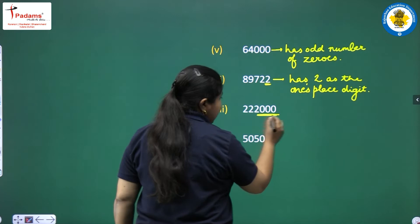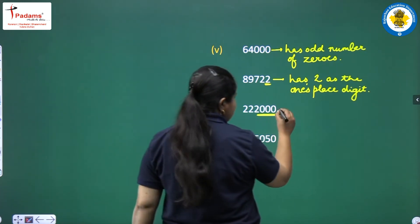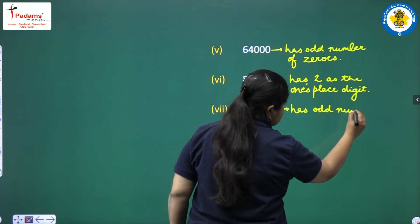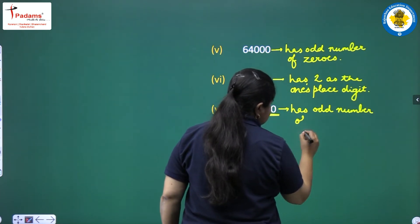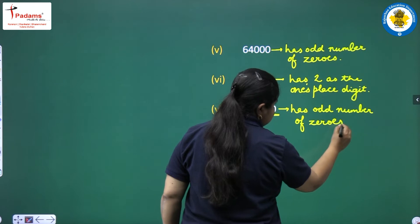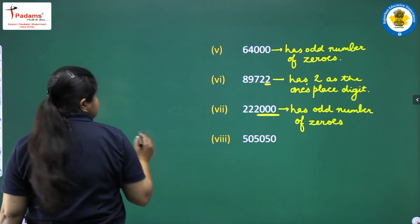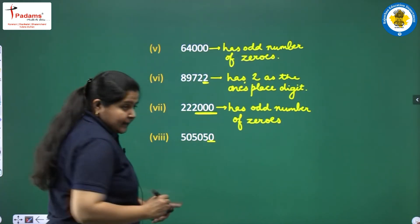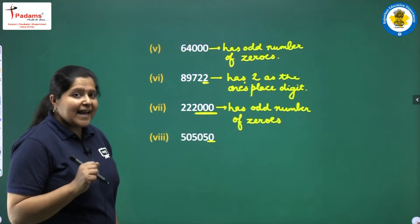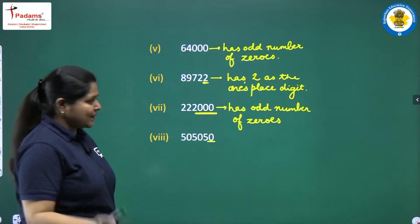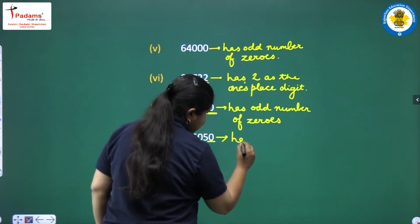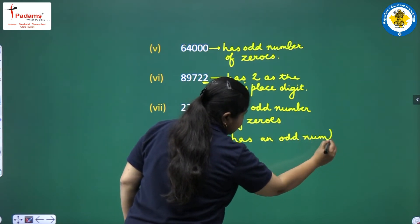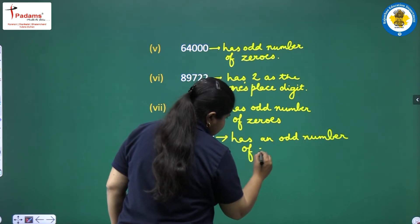Another number has an odd number of zeros — 3 zeros — so it is not a square number. You can answer in any language as long as the meaning is correct. One more number has a single zero, which is an odd number of zeros, so it is not a perfect square.